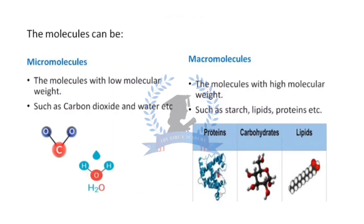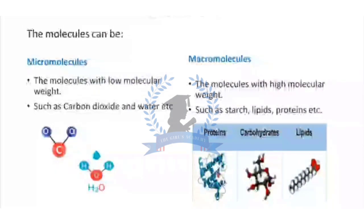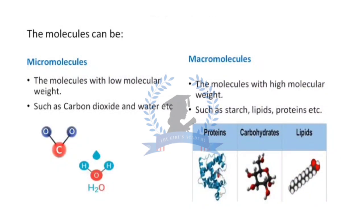This molecule is basically the stable form and it is a complex form. In organisms, elements usually do not occur in isolated forms. Molecules can be micromolecules or macromolecules. The molecules with low molecular weight are called micromolecules, such as carbon dioxide and water. Here you can see carbon dioxide: one carbon combines with two oxygen. It is a very small molecule. In water, H2O, one oxygen combines with two hydrogen atoms by covalent bond. Next we have macromolecules. These are molecules with high molecular weight, such as starch, lipids, proteins, etc.